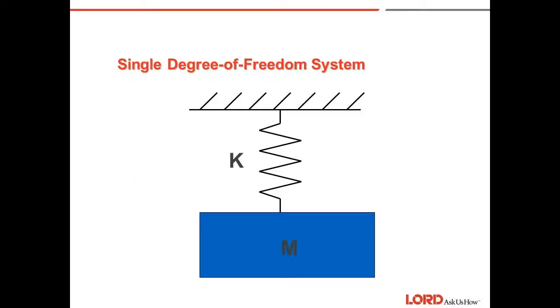Single degree of freedom systems. Vibration is an oscillatory motion. Any body with mass and elasticity can vibrate. The simplest type of vibrating system is called a single degree of freedom spring mass system. The spring is characterized by spring rate or stiffness k, usually given in pounds per inch or newton per millimeter. It is also called a single degree of freedom system because the motion can occur in only one direction.